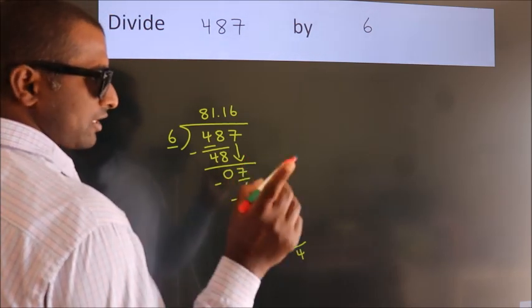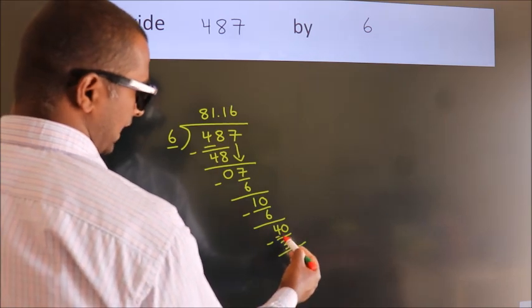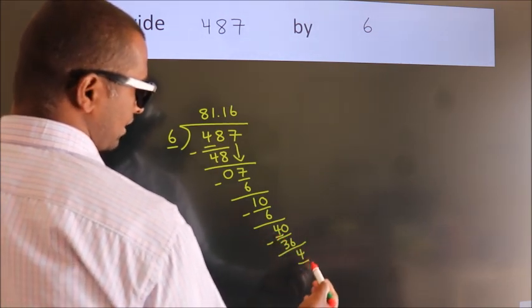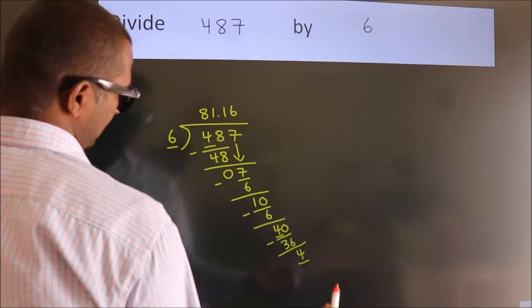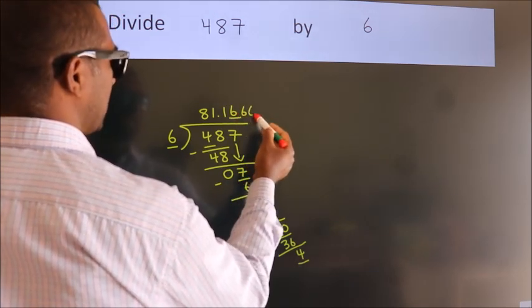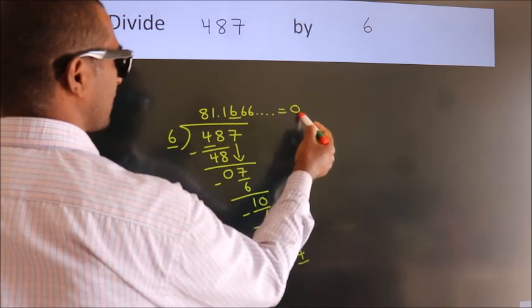Now you observe. We had 4 here. And we got 4 again. That means this number keep on repeating. So this is our quotient.